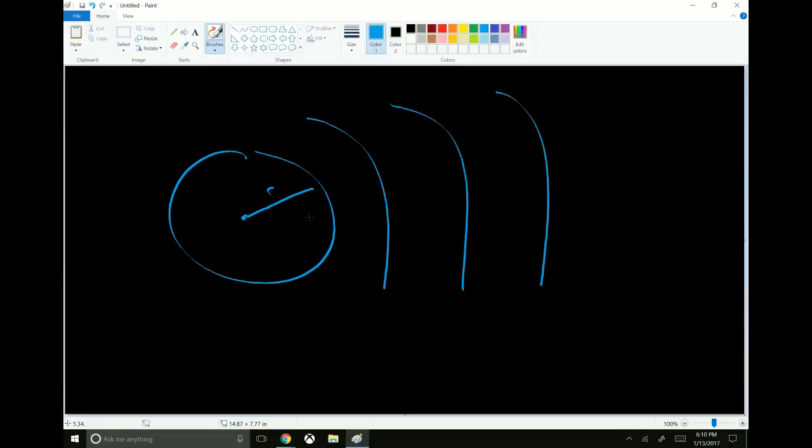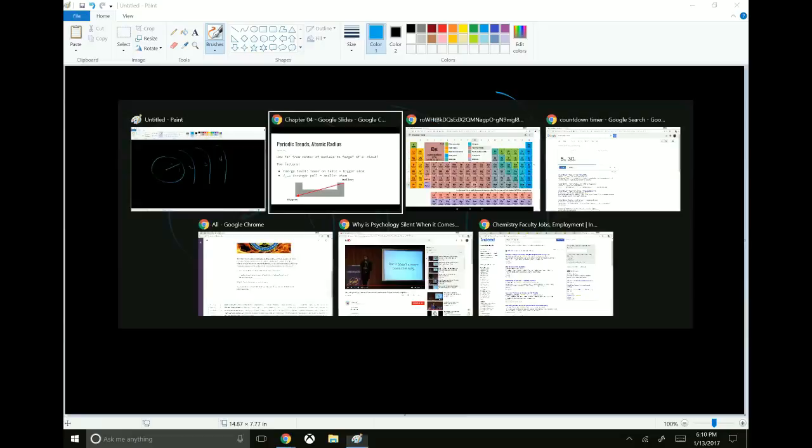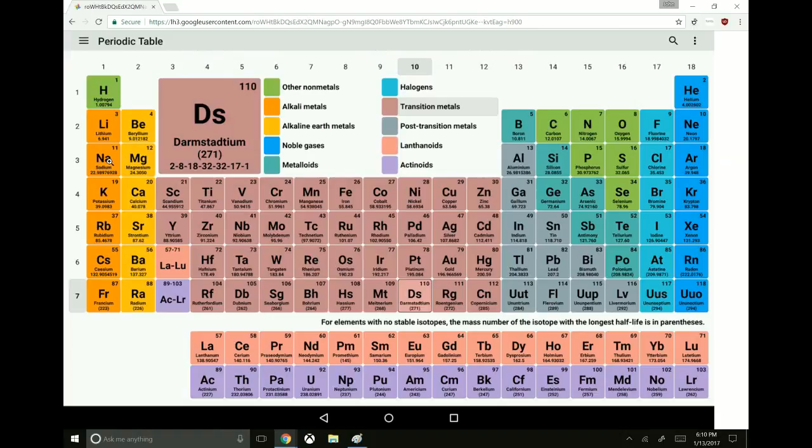Every time you go down a row in the periodic table, you're going up an energy level. You're getting further away from the edge of the nucleus. So the lower you get, the bigger the atoms are. The heavier things are at the bottom of the periodic table, the bigger things are at the bottom of the periodic table.